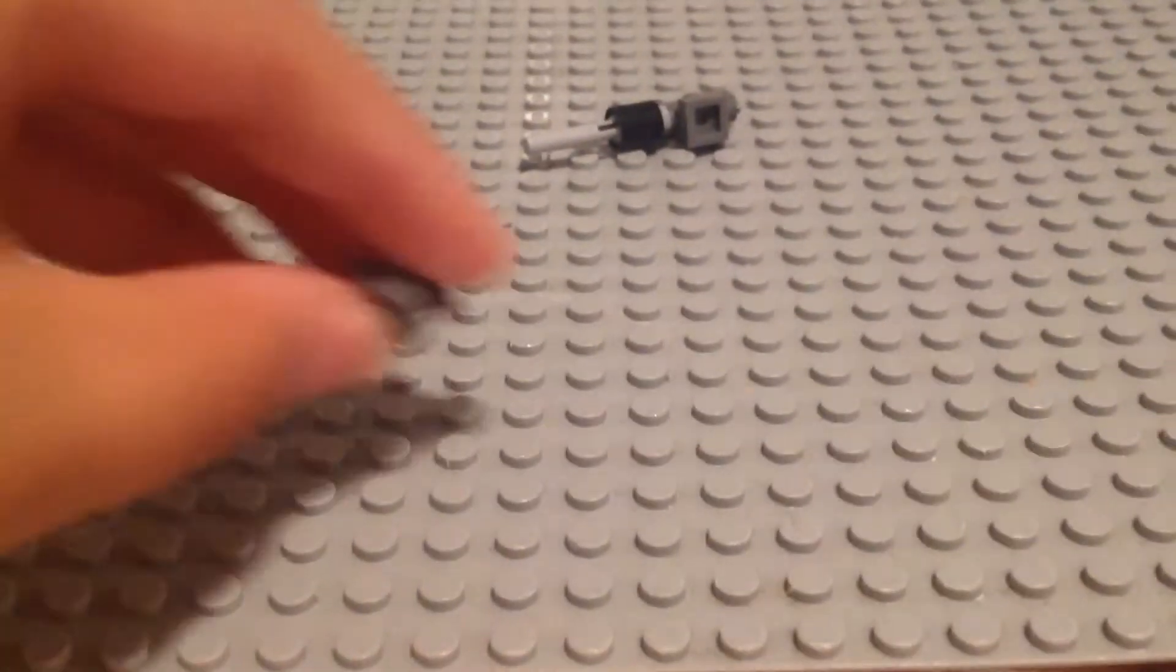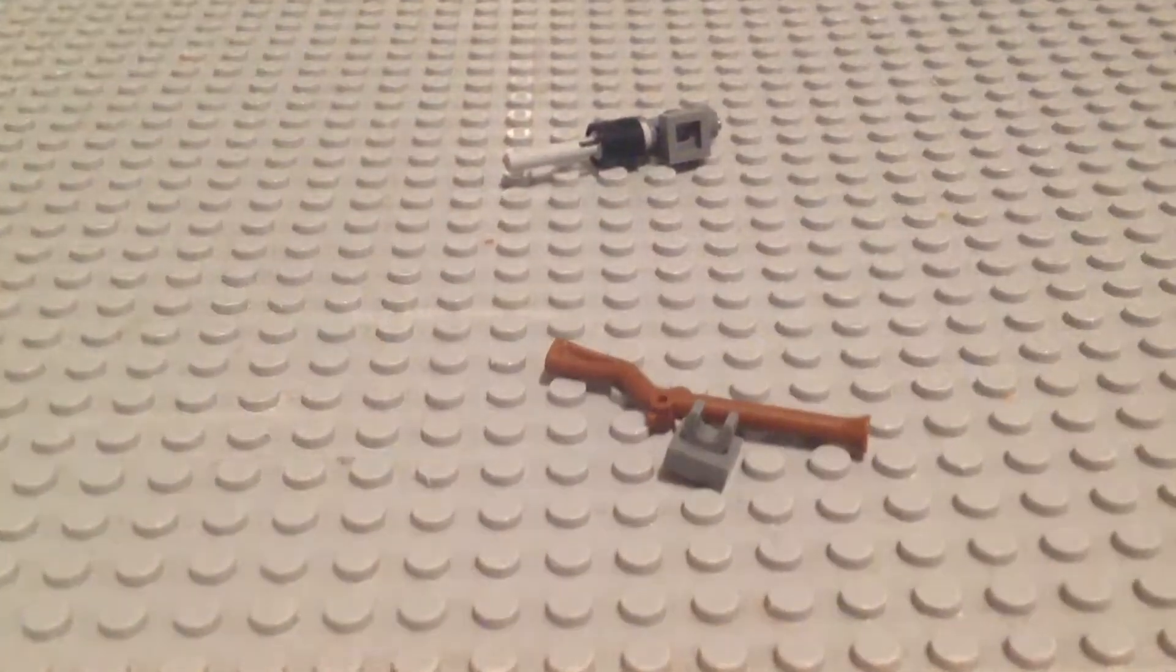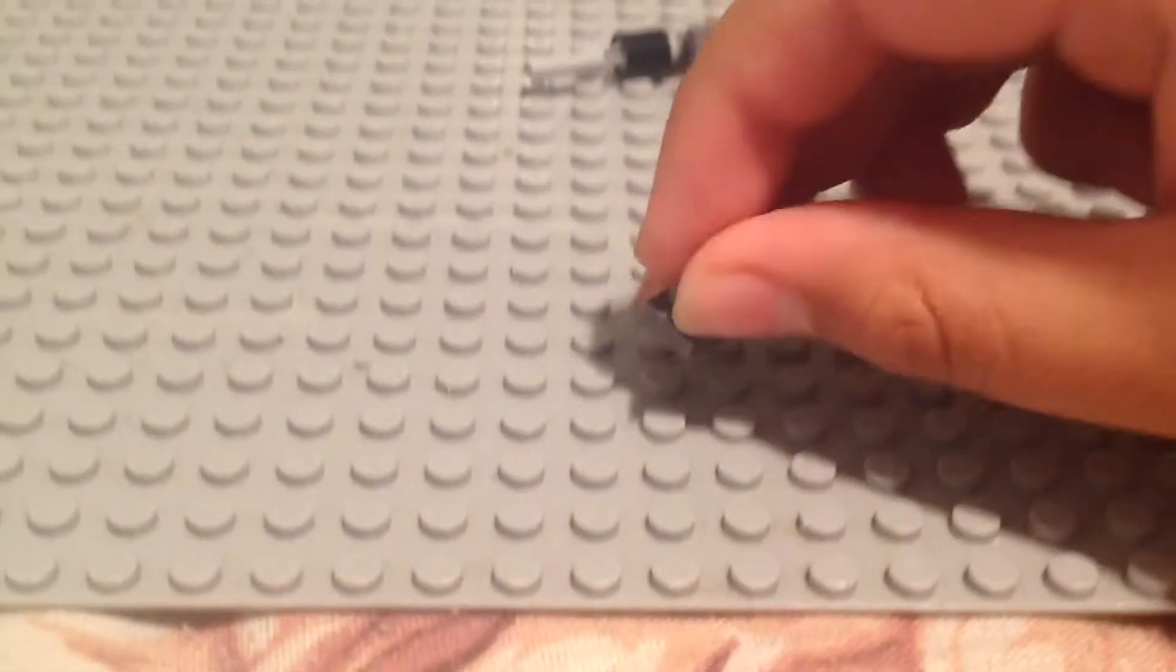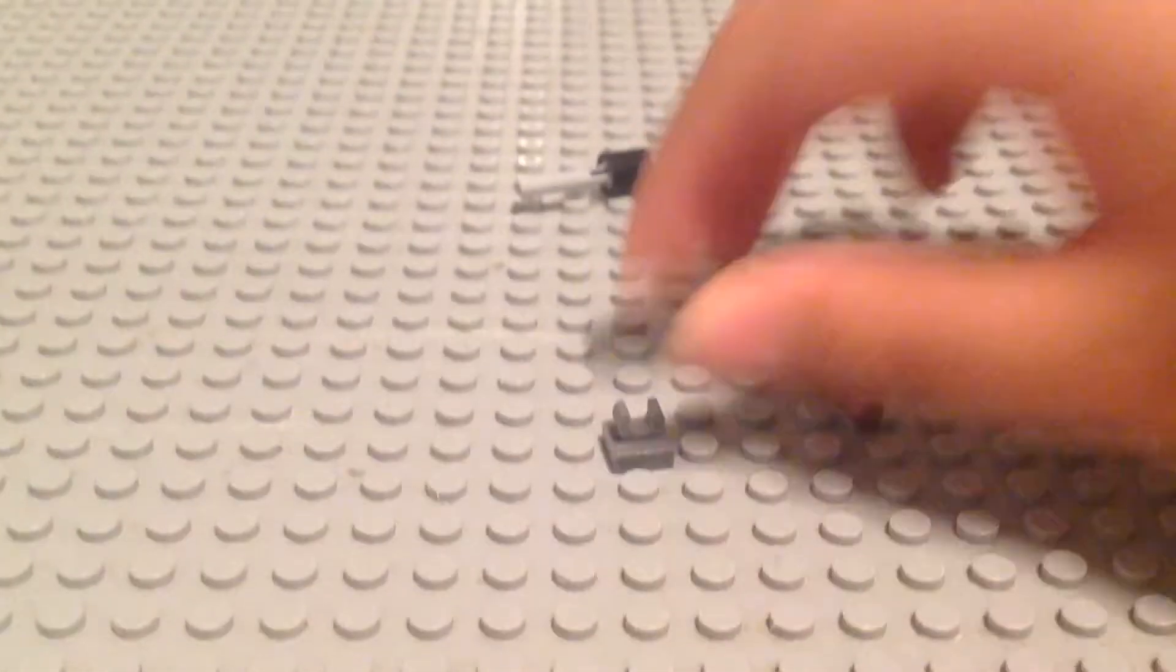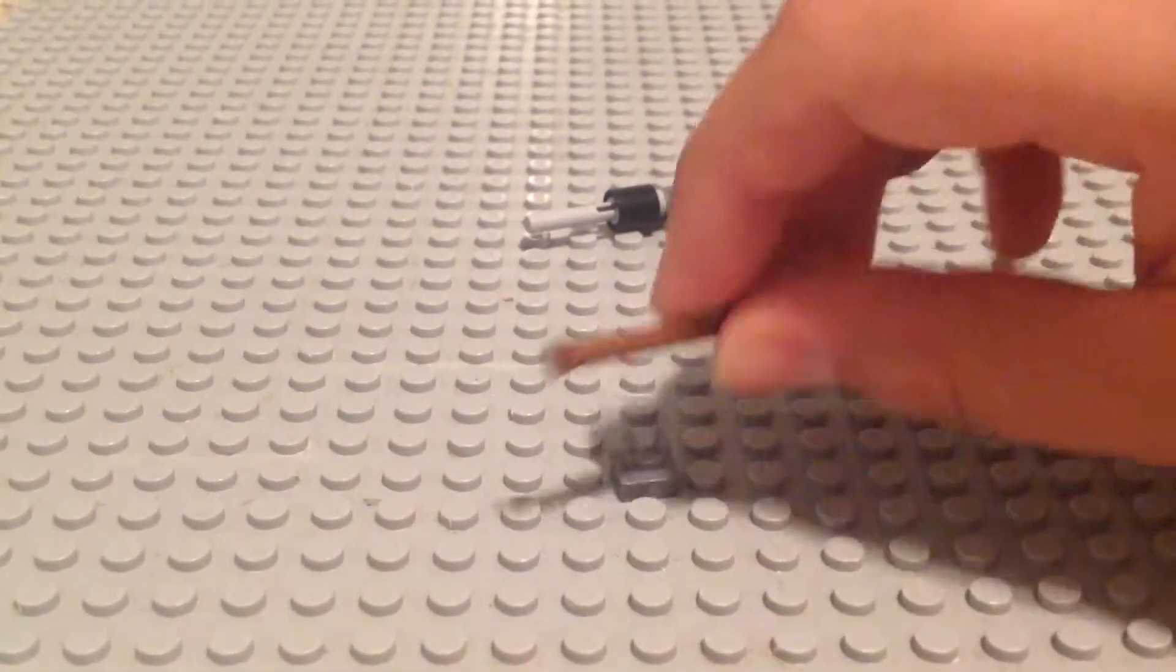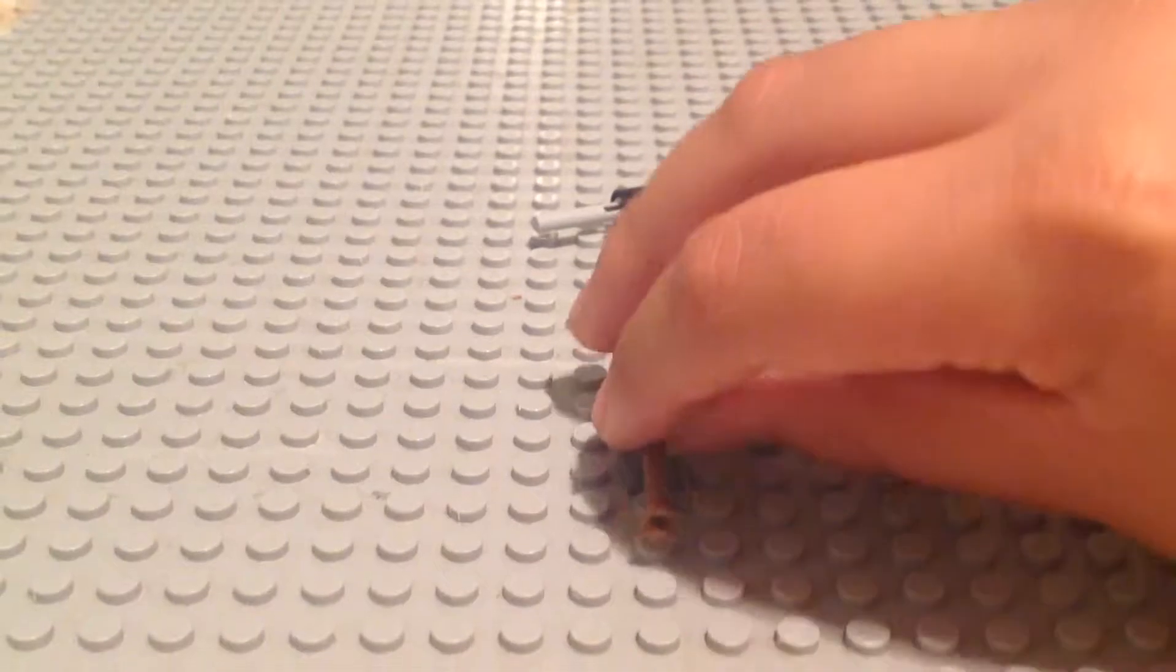This is my second LEGO gun. All you need is a rifle and a 1x1 piece with a clip. For me, I'll do the same thing. Place it, just take the rifle, and just place it like that.